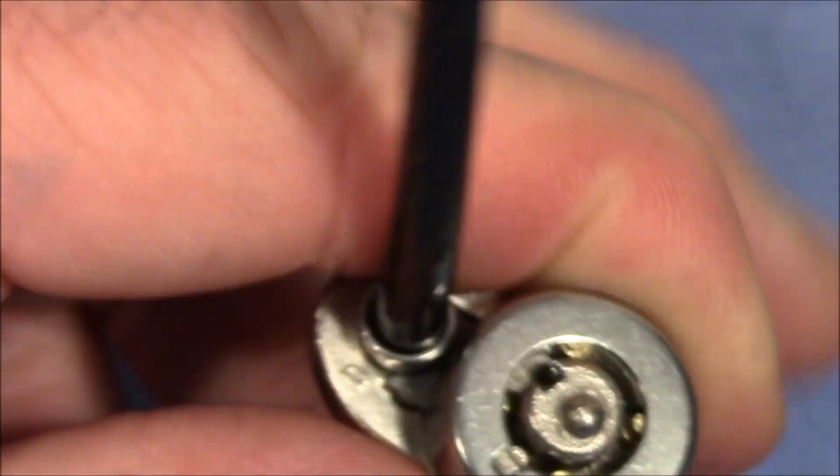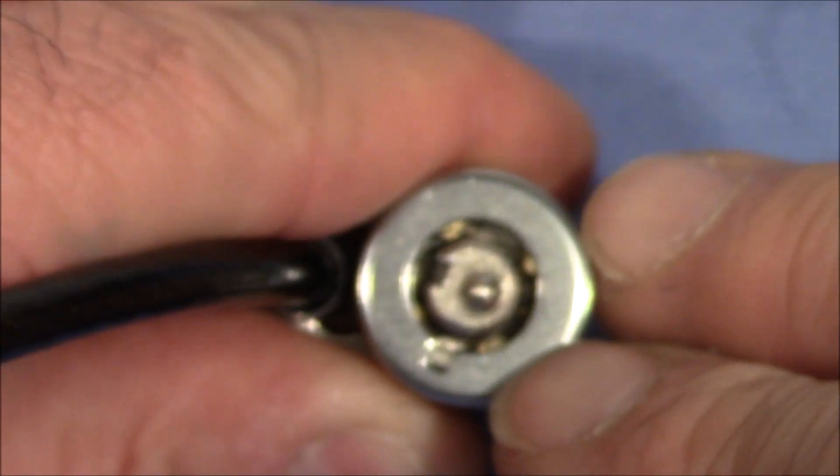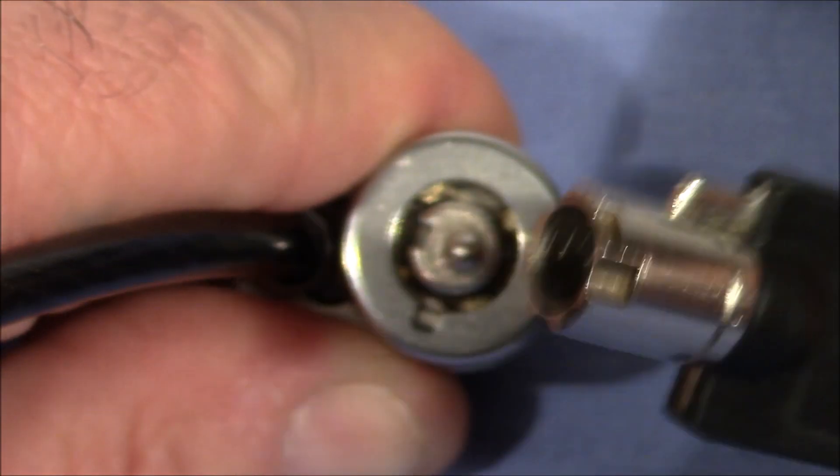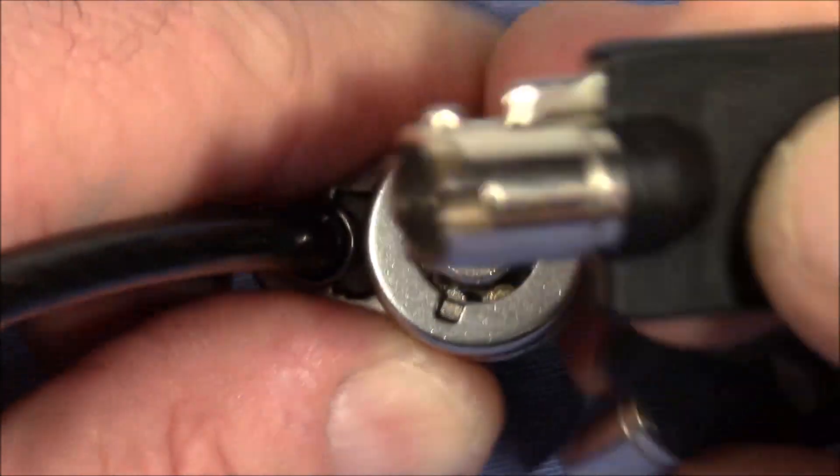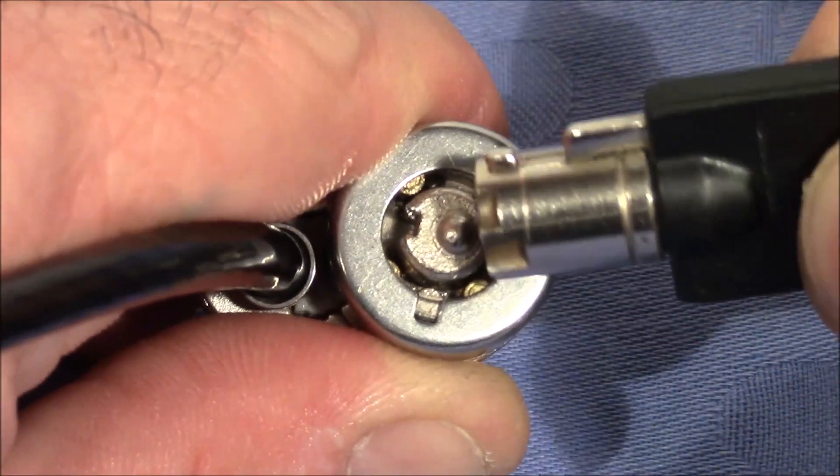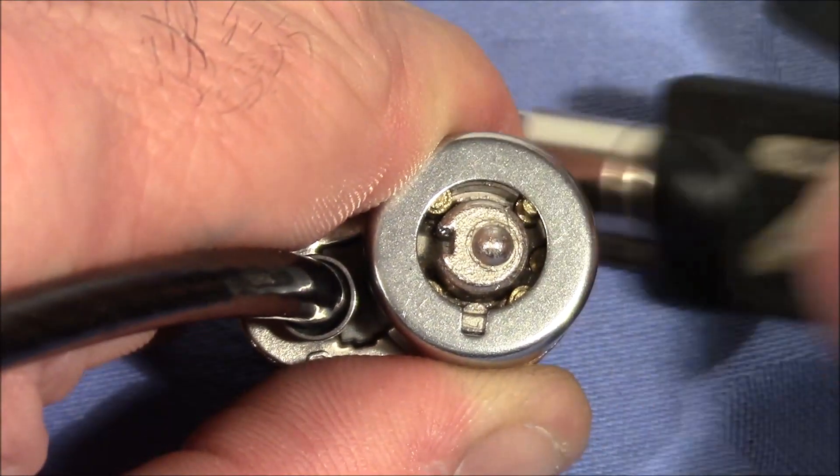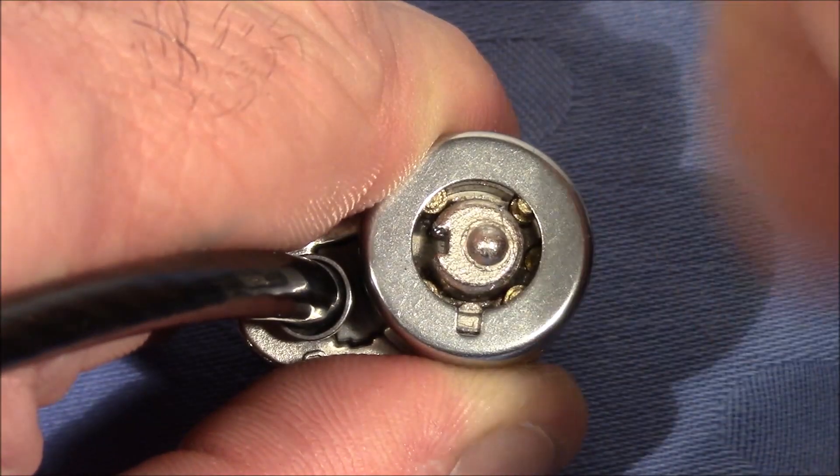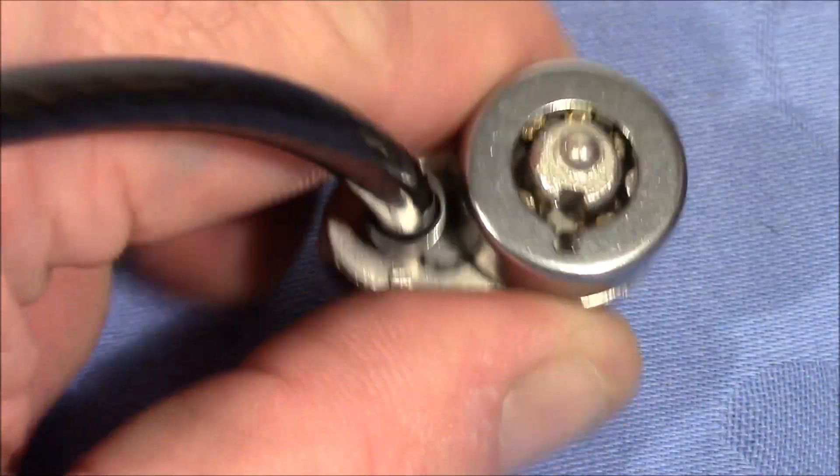So when you have the lock in this state you cannot use the key with the nose. You cannot use the key with the nose to close it again because the nose prevents the key from going in. But with a key that has no nose I can just put in the key and turn it.